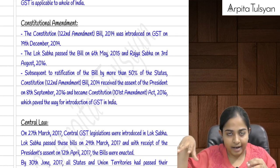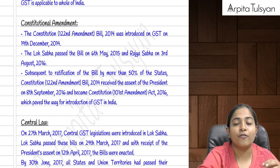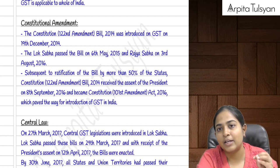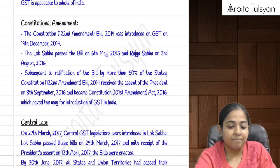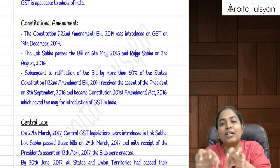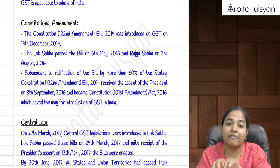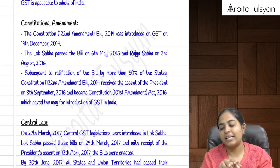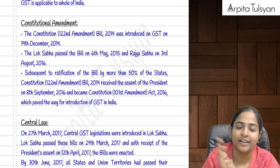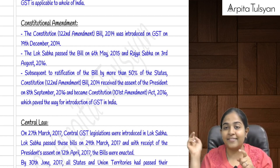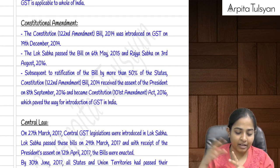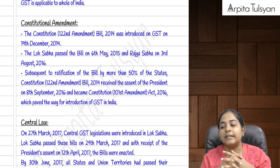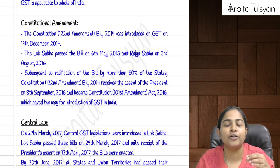The constitutional amendment was required because under GST we had to give powers to both central as well as state governments to collect the same taxes, that is GST. We had to give powers to both of them to collect GST, and for that purpose a constitutional amendment was required.